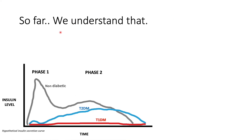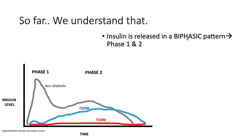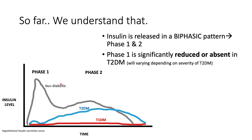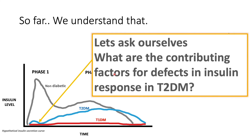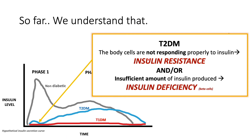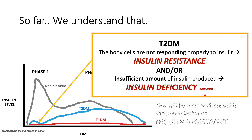To briefly summarize: insulin is released in a biphasic pattern — phase 1 and phase 2. In type 2 diabetes, phase 1 is significantly reduced or even absent, and this varies depending on the severity of the type 2 diabetes. This is also a sign of beta cell dysfunction. Peak insulin levels are delayed, which can lead to postprandial hyperglycemia. The contributing factors for these defects in insulin response involve insulin resistance — where body cells are not responding properly to insulin — and insulin deficiency related to beta cell dysfunction. We will discuss this further in the presentation on insulin resistance.